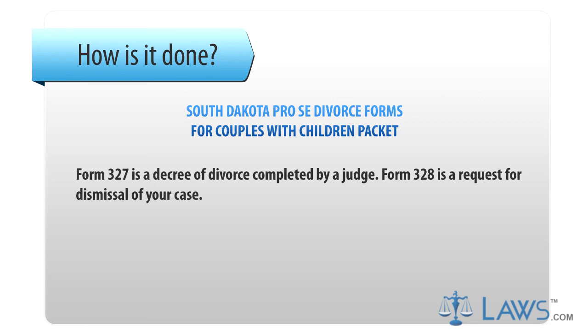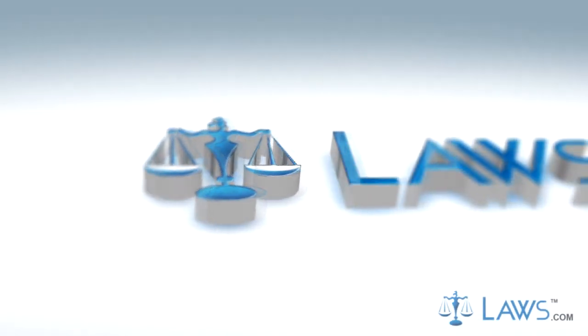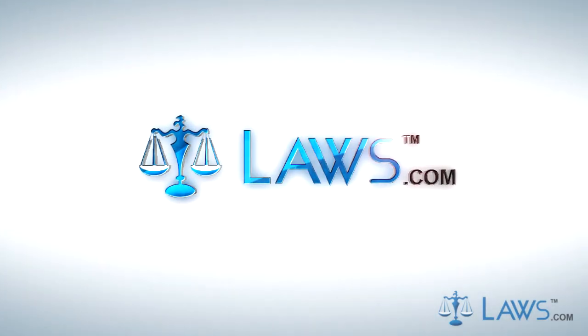Step 8: Form 327 is a decree of divorce completed by a judge. Form 328 is a request for dismissal of your case. To watch more videos, please make sure to visit laws.com.